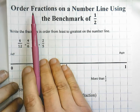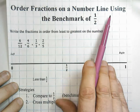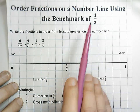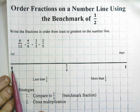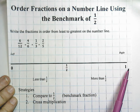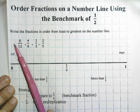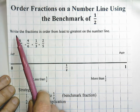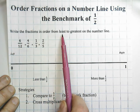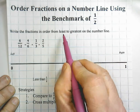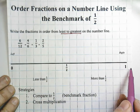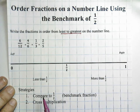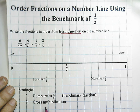Hey everybody, our topic today is ordering fractions on a number line using the benchmark of one-half. Here's our number line — a simple number line starting from zero to one with one-half in between. We have four fractions of differing values that we need to place in order on the number line. Our strategies today are to compare each fraction to one-half, which we call a benchmark fraction, and we might use cross multiplication if we're not sure.